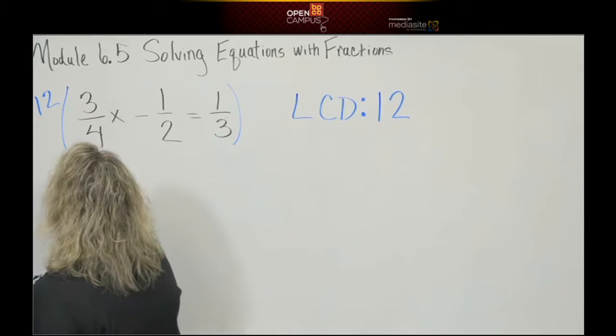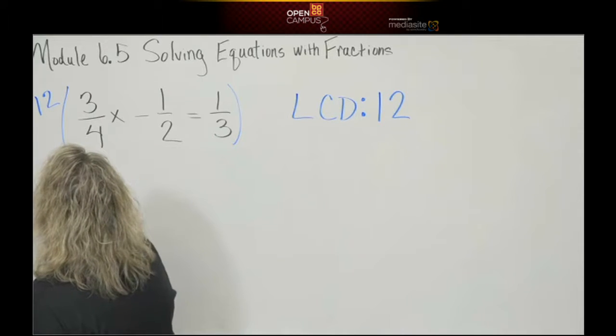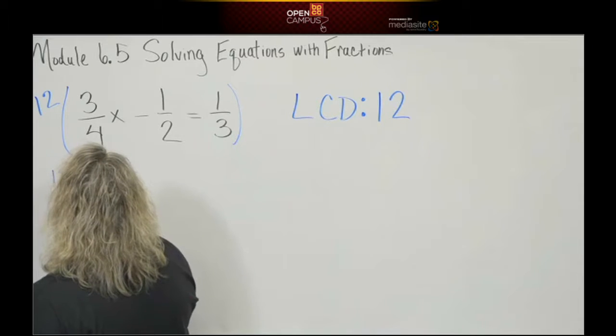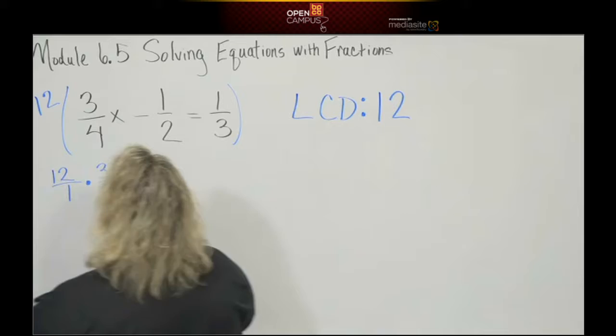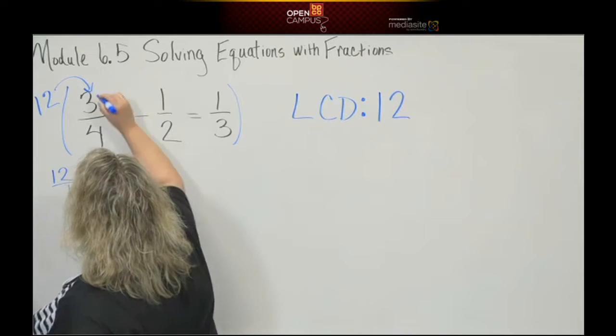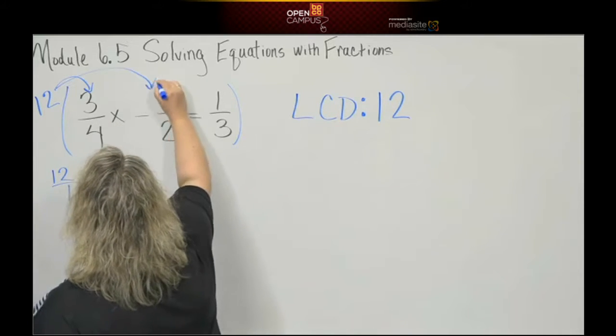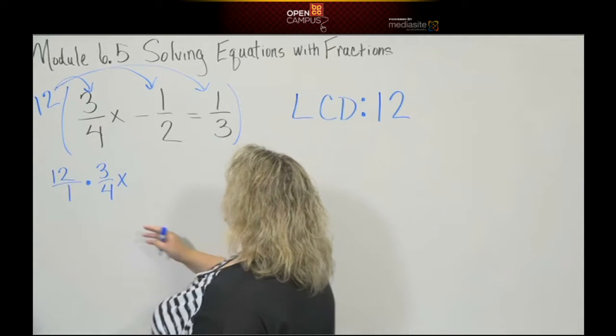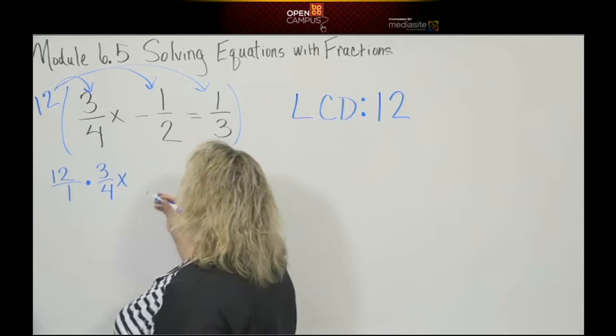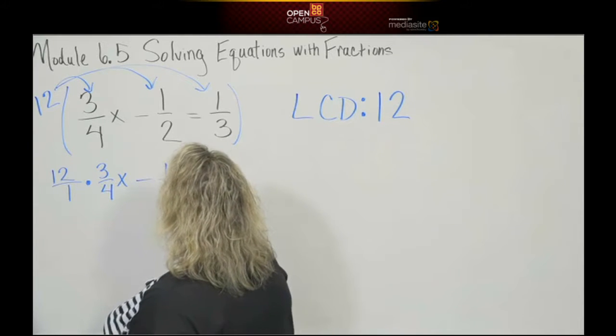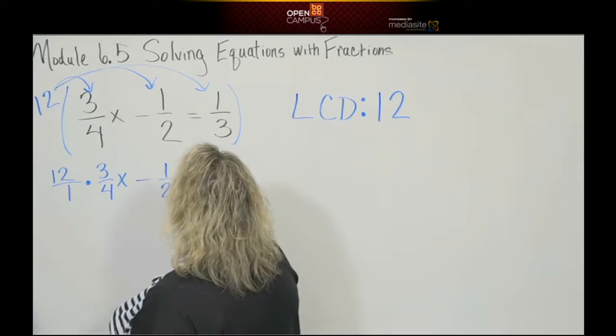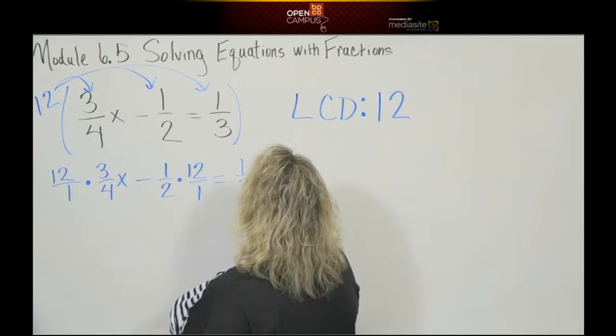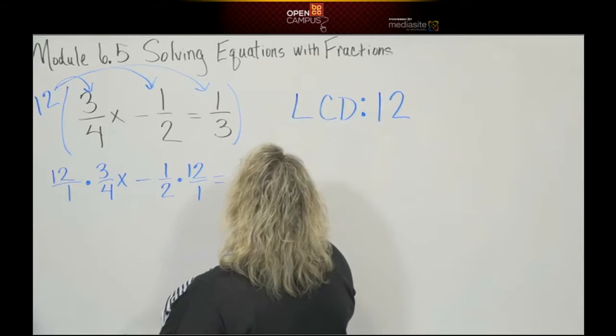Because that way I'm showing that I'm doing the distributed property. I'm going to do the distributed property here, and distribute here. So I'm just showing you physically that's what you're doing. So, minus one-half multiplied to my distributing twelve over one is equal to one-third multiplied to my distributing twelve over one.